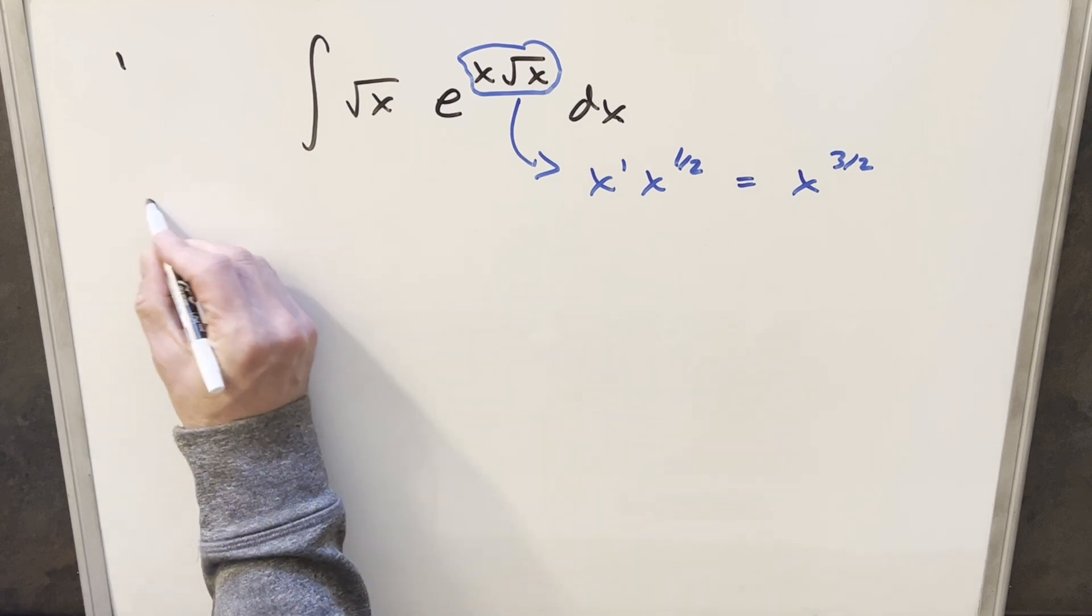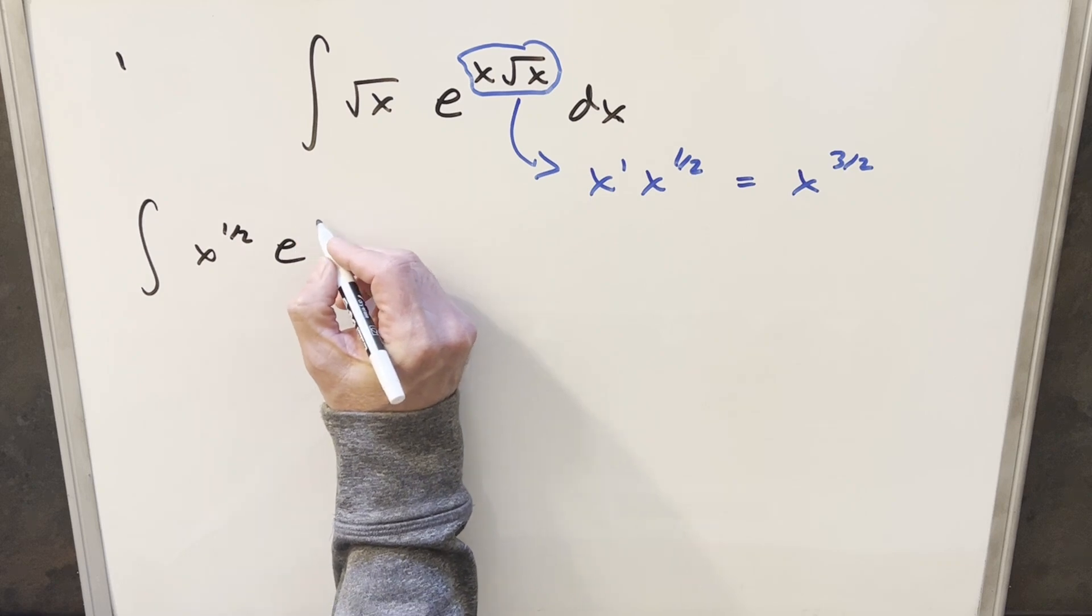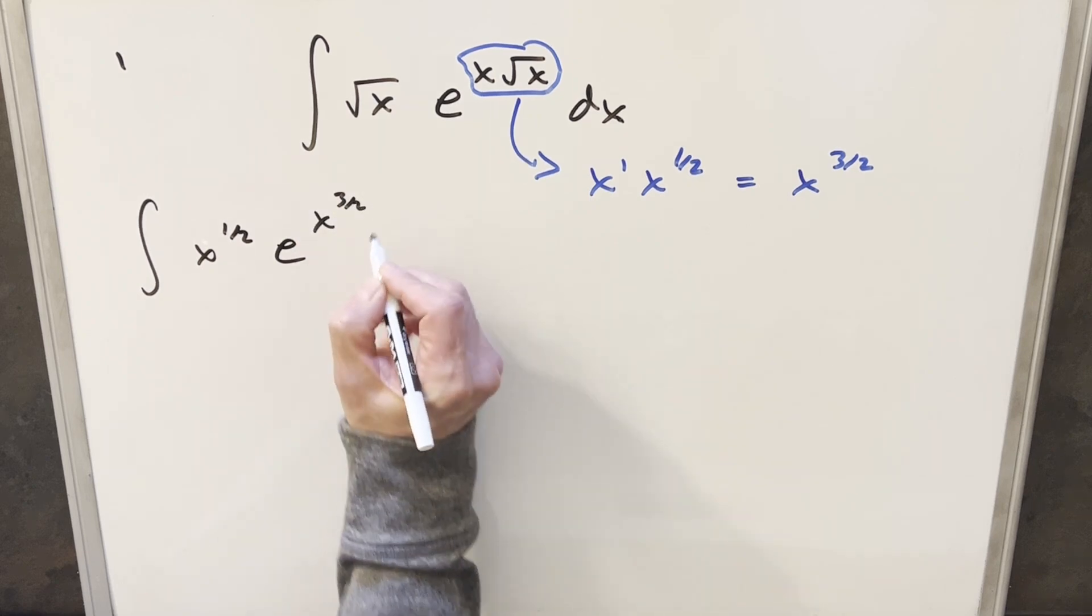So then I'll go ahead and I'll just rewrite the whole integral. Now for this, I'm going to write this as x to the 1 half. And then for this, we'll have our e to the x to the 3 halves dx.